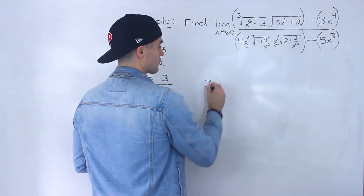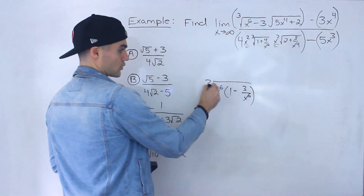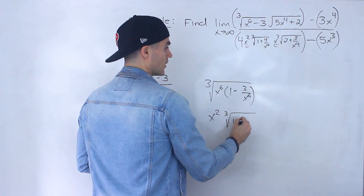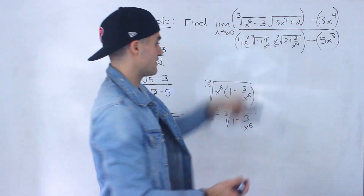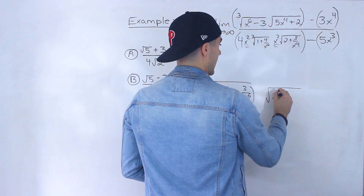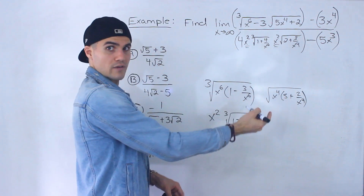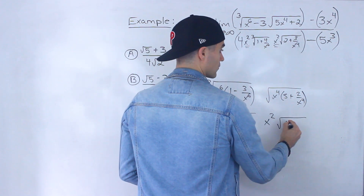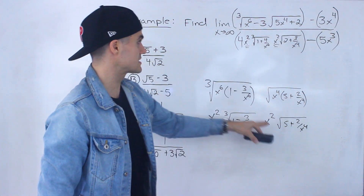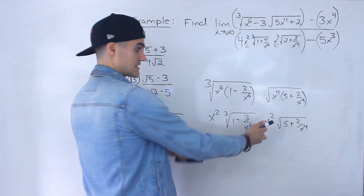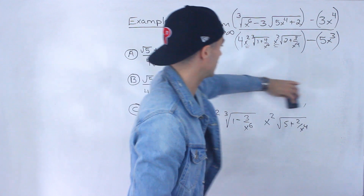If we show the work for the denominator: for this third root, we take out x to the six, leaving one minus three over x to the six. The third root of x to the six is x squared, and then we have the third root of one minus three over x to the six. So this turns into that. For the square root, we take out x to the four, giving us five plus two over x to the four. The square root of x to the four is x squared, and then we have the square root of five plus two over x to the four. We can then multiply x squared by x squared to get x to the four.